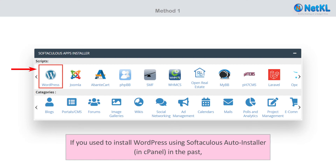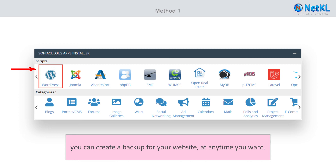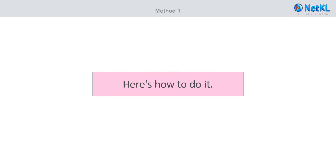If you used to install WordPress using Softaculous Auto Installer in the past, you can create a backup for your website at any time you want. Here's how to do it.